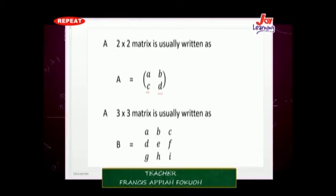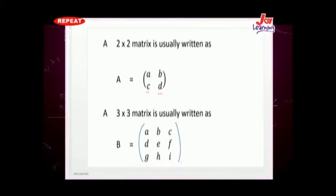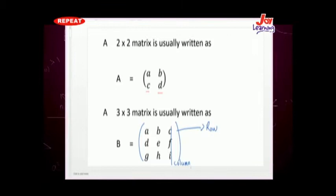For a 3x3 matrix, we have entries A, B, C in the first row, D, E, F in the second row, and G, H, I in the third row. The horizontal lines are rows and the vertical lines are columns. Any time we name a matrix, we name it by the row and column method. So 3x3 means 3 rows and 3 columns.